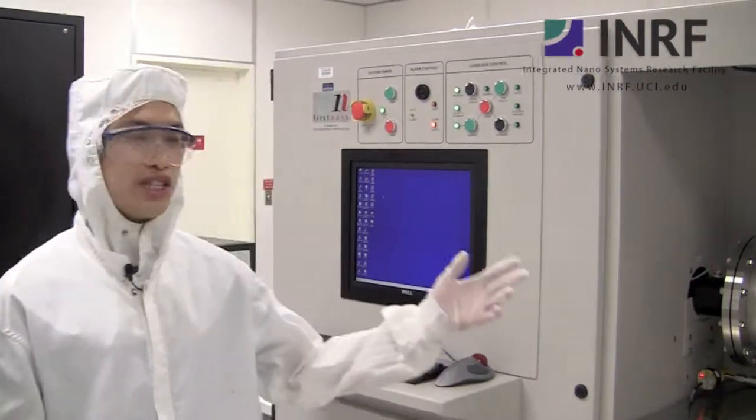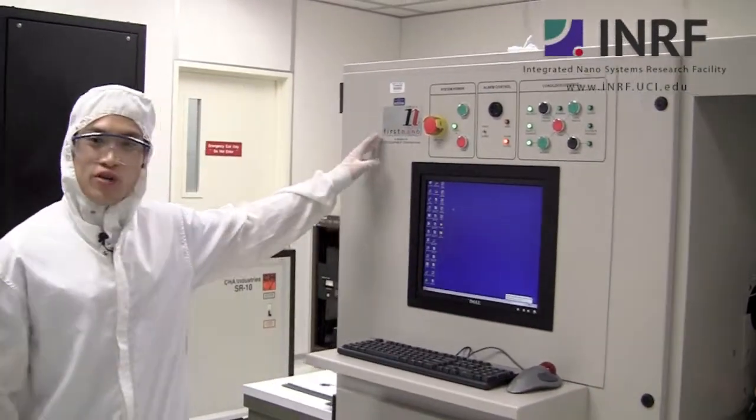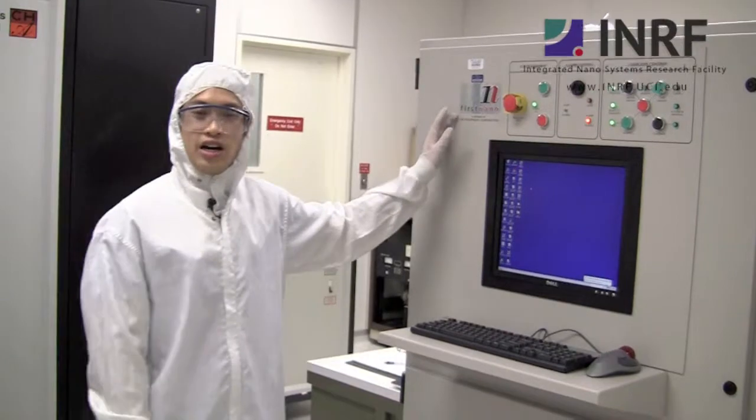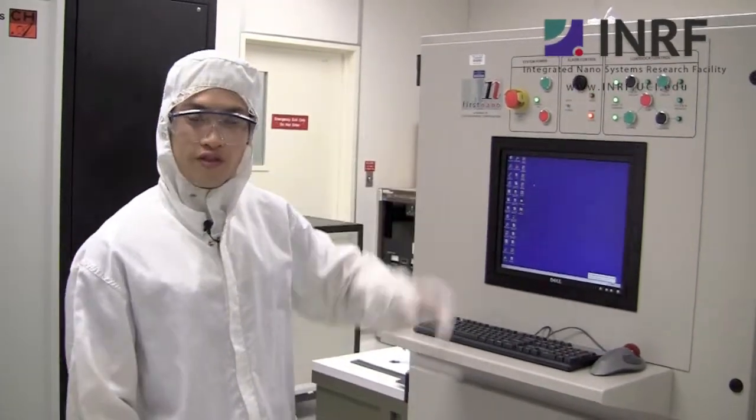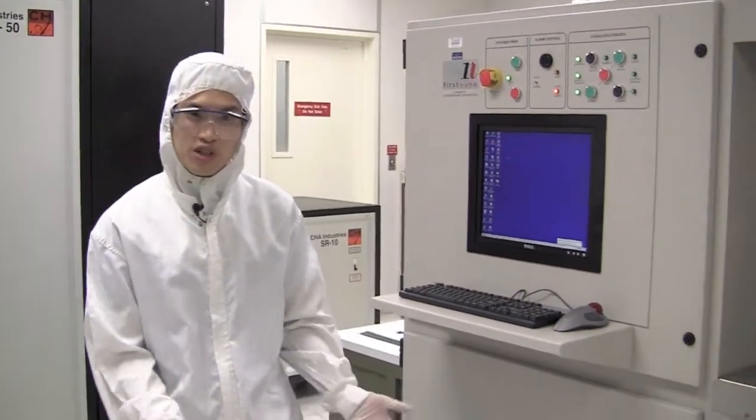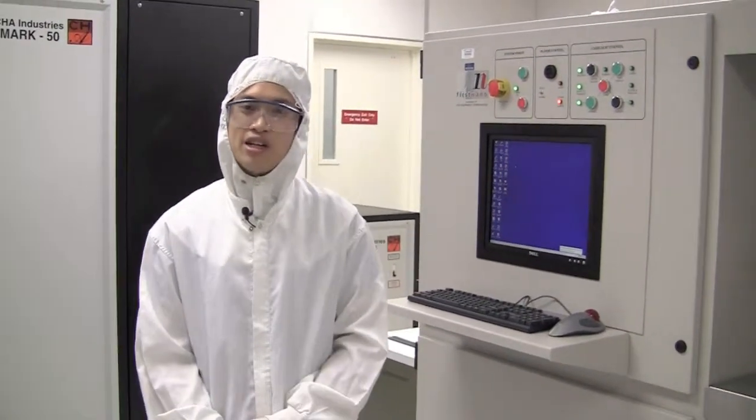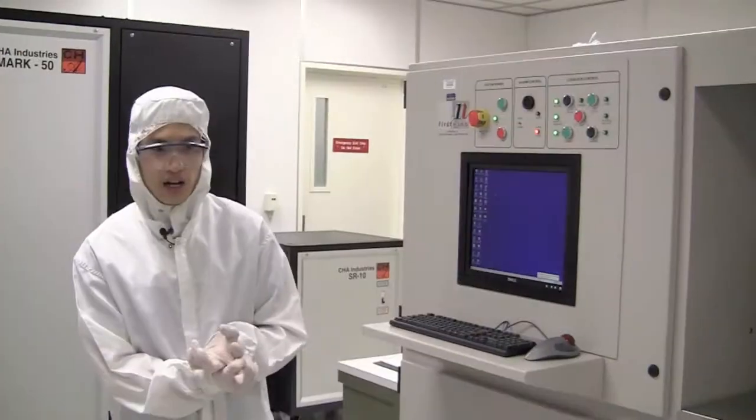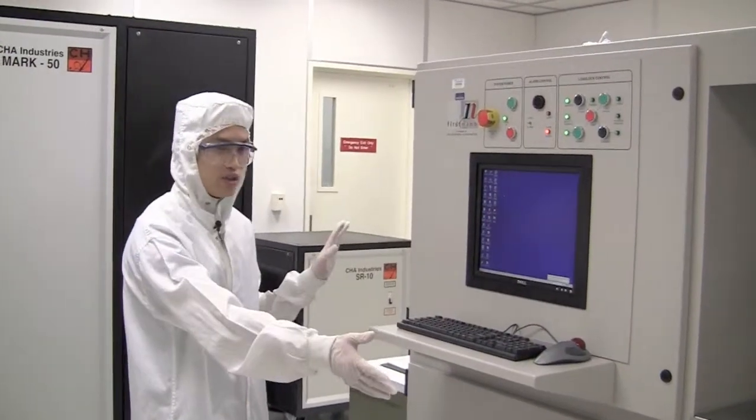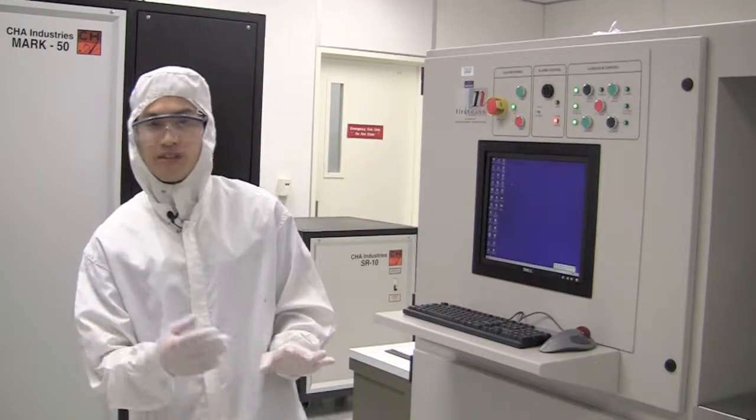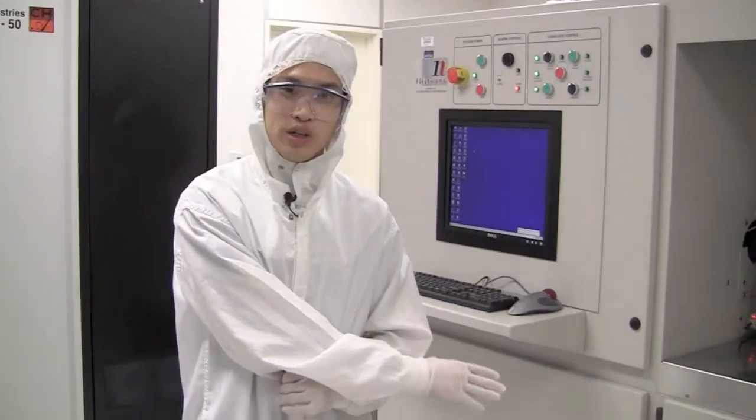Hi, my name is Phi Pham. Today I'm going to talk to you about the first nano CVD furnace. This furnace is used for synthesis of materials such as graphene and carbon nanotubes, but we can also use it for processing such as vacuum annealing. I'm going to talk about the general layout of the tool and specifically how to safely operate it.